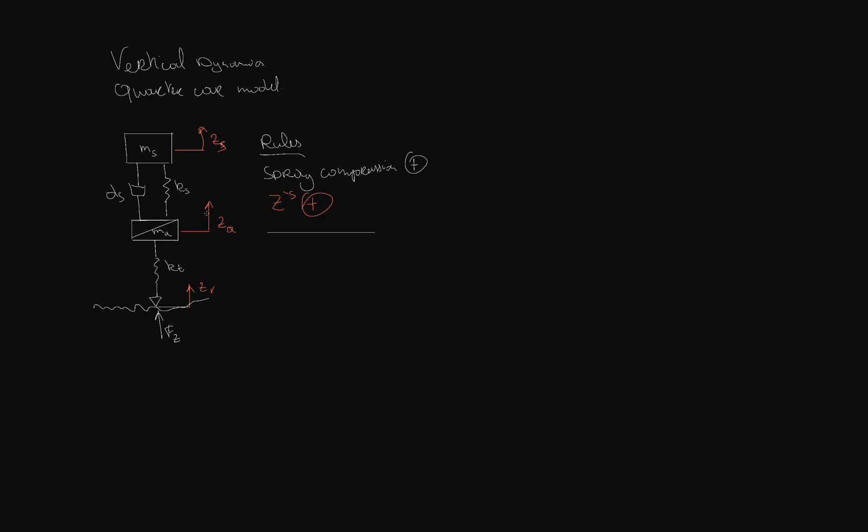So we'll start off with a free body diagram. We have two masses, so let's draw them. I always think it's easier to draw and go from there. So there's the m_s and m_a. You can see, if you want to draw the road, not really necessary but makes life a bit easier. So assume the road input is, or the road gives an input to the spring.